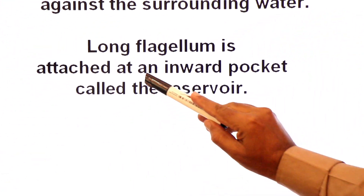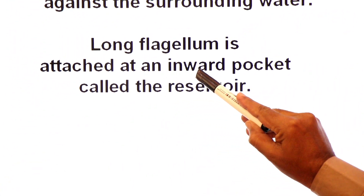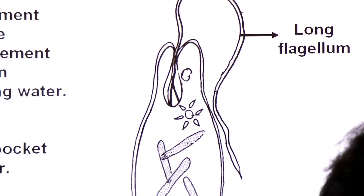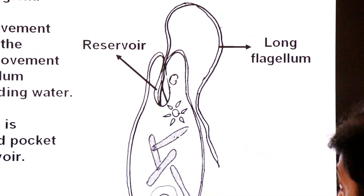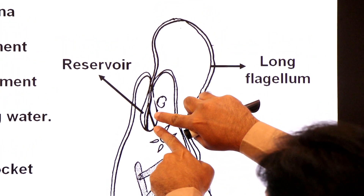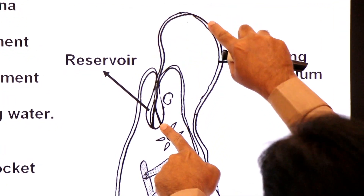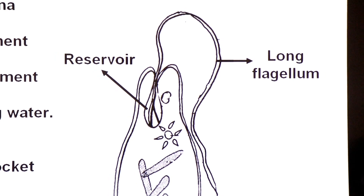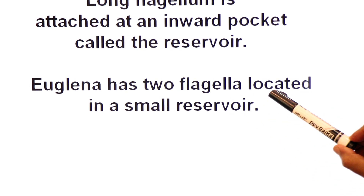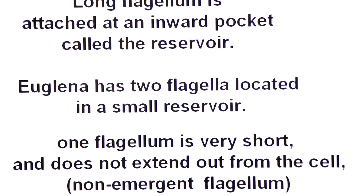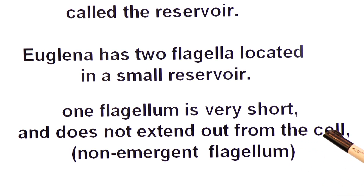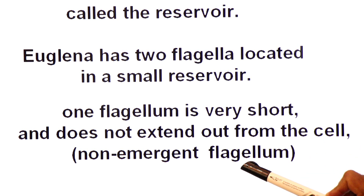The long flagellum is attached at an inward pocket called the reservoir. Euglena has two flagella, both located in this small reservoir. One flagellum is very short and does not extend out from the cell — it is called the non-emergent flagellum.